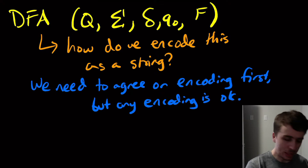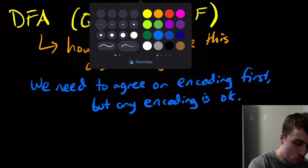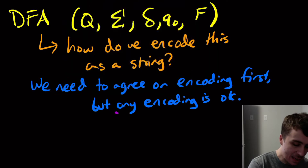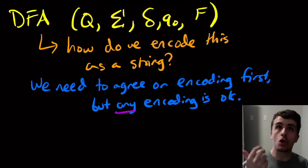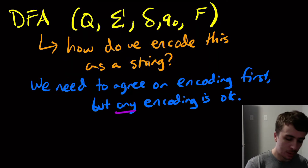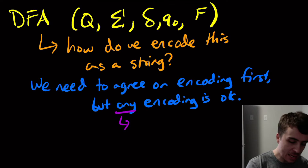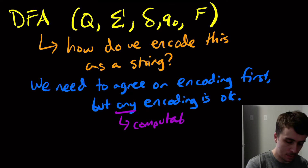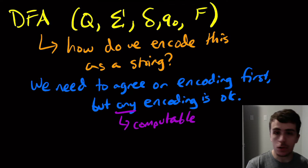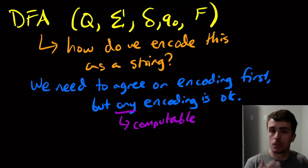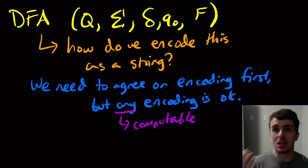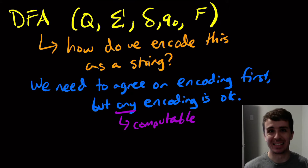I should actually say it's not really any encoding — it's any encoding that you could compute. So any computable encoding. If there's an algorithm to make the string out of it then that's okay. If it's not possible then that's not really helpful.